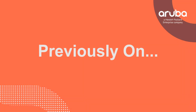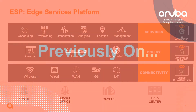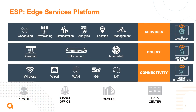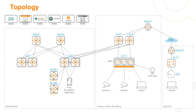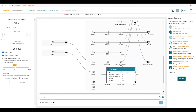Previously on the Aruba Switching story, we've learned about the Edge Services platform and how Aruba Switching fits into the unified infrastructure portion of ESP. We've had a workflow where we've needed to securely onboard a camera and have it access the data center. First, we had to provision the data center using the Aruba Fabric Composer.